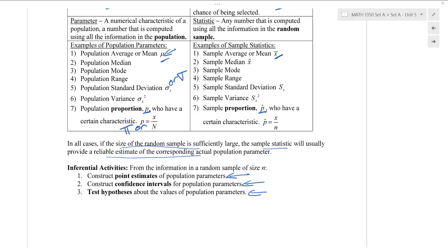Now these sorts of things that we're going to be doing are only valid if we have random samples. If our samples are chosen in a biased way, a lot of what we'll do will fall apart and we'll get results that don't make sense or are misleading. And if the sample size is too small, we may also have some problems. So those are some things to be aware of.